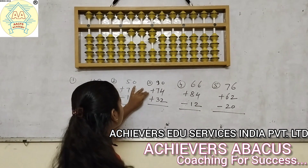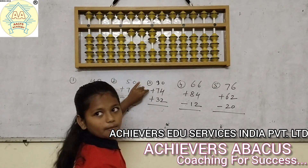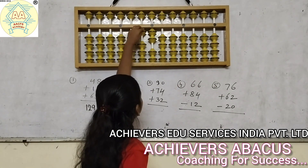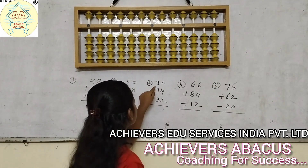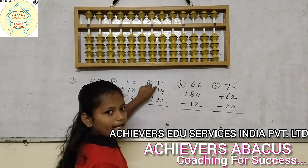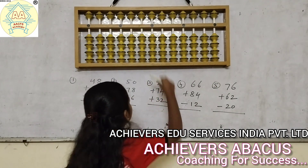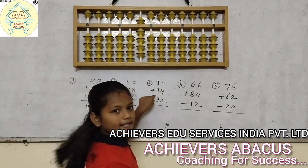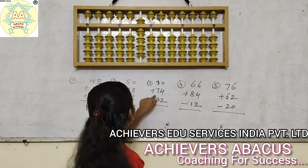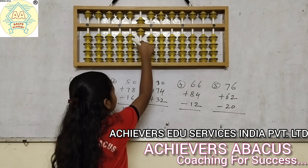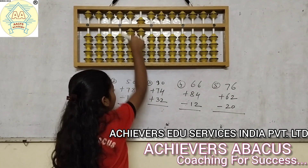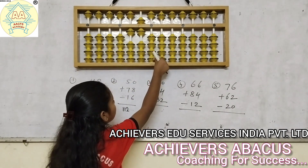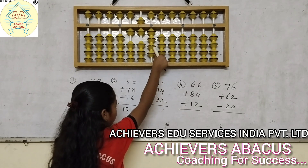Now we will go to the third sum. First of all we will clear the abacus, then add 90. Then add 90. Then add 74. The formula is: less 3, add 10. Add 7.